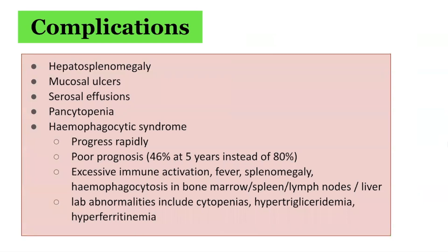Complications associated with subcutaneous panniculitis-like T-cell lymphoma include hepatosplenomegaly, mucosal ulcers, serosal effusions, pancytopenia, and most significantly, hemophagocytic syndrome, or HPS. This is an issue which progresses rapidly and has a poor prognosis — 46% survival at 5 years instead of 80%. It is characterized by excessive immune activation, fever, splenomegaly, and hemophagocytosis in the bone marrow, spleen, lymph nodes, and liver. Lab abnormalities include cytopenias, hypertriglyceridemia, and hyperferritinemia.